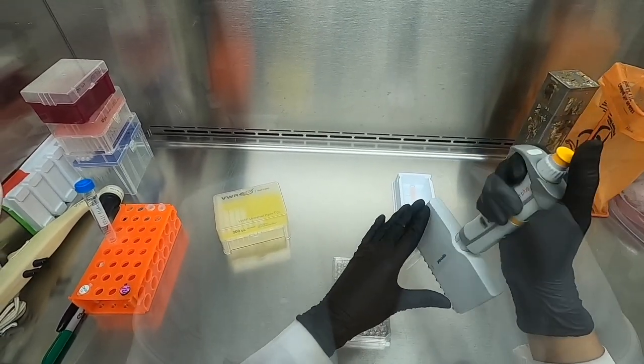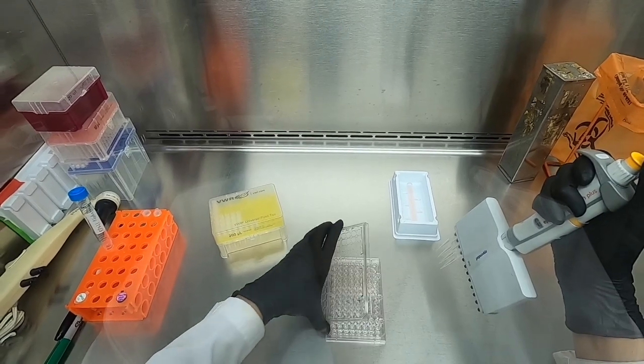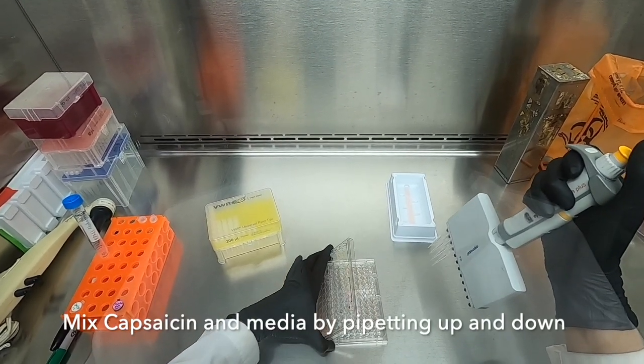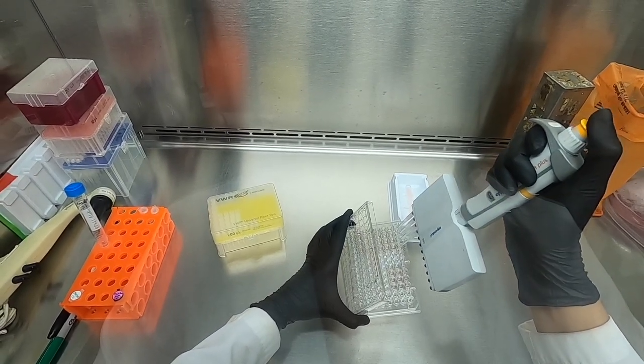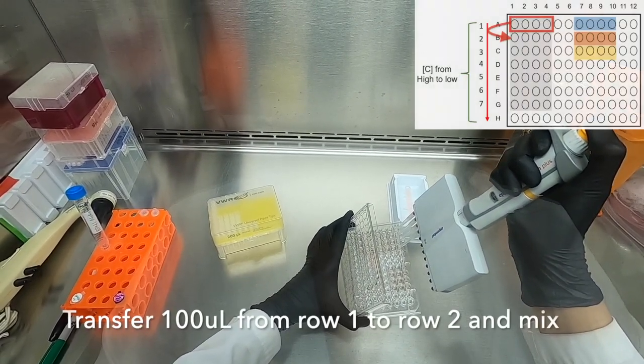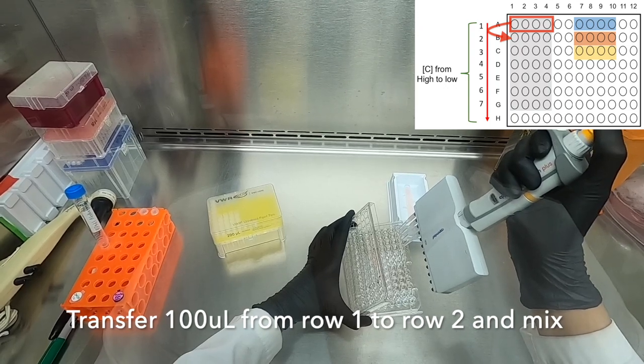Keep in mind that our wells contain 100 microliters of media and we will be transferring 100 microliters from each row to each subsequent row. This means that we will be dividing the concentration in half as we move down our plate.